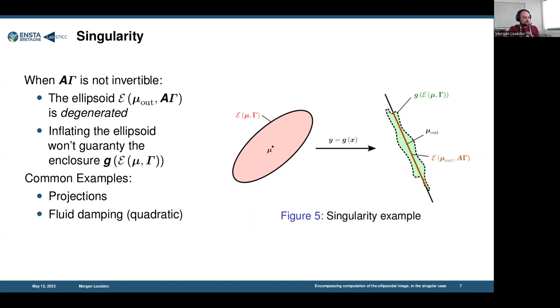Or when you have sometimes fluid damping and quadratic appearance of certain variables. In this case we can't invert matrices, so we can't use the previous algorithm.